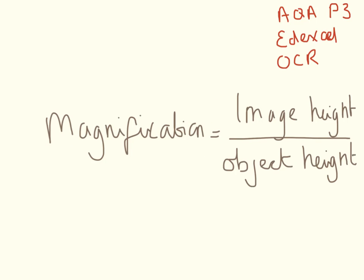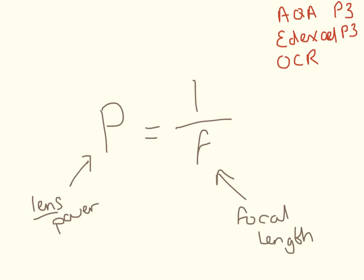No units needed for magnification either, because it's just a ratio. You just need to measure the image height and divide it by the object height. So here we have lens power. Not electrical power, lens power. And this is measured in diopters. And focal length, which is in meters.